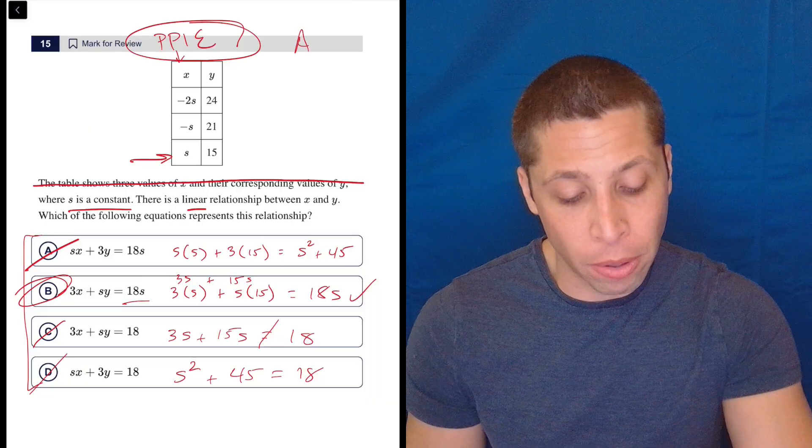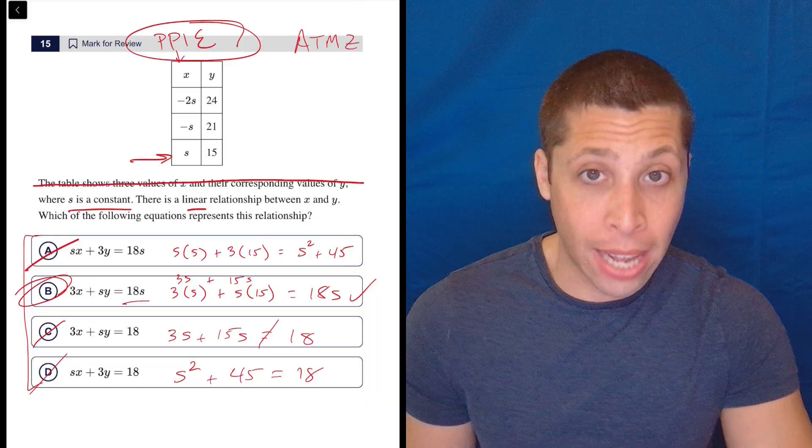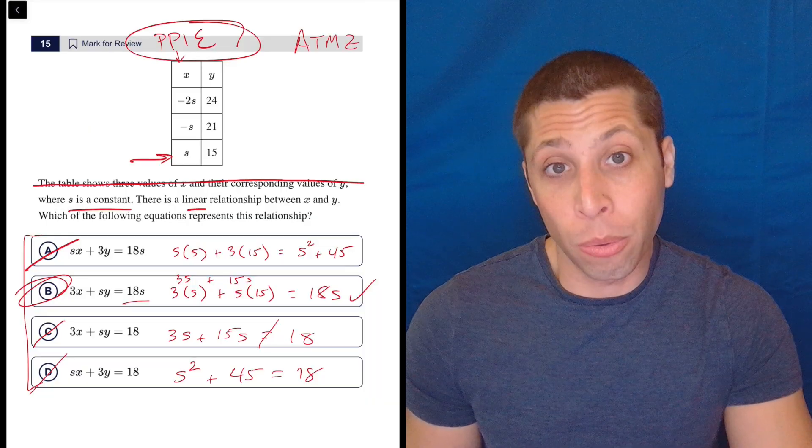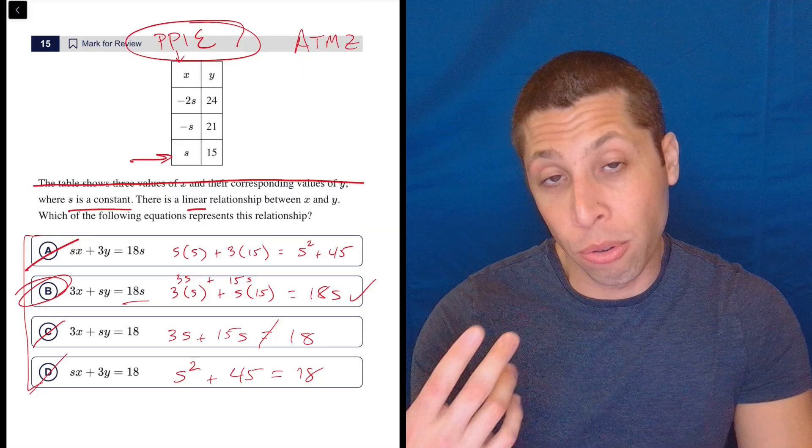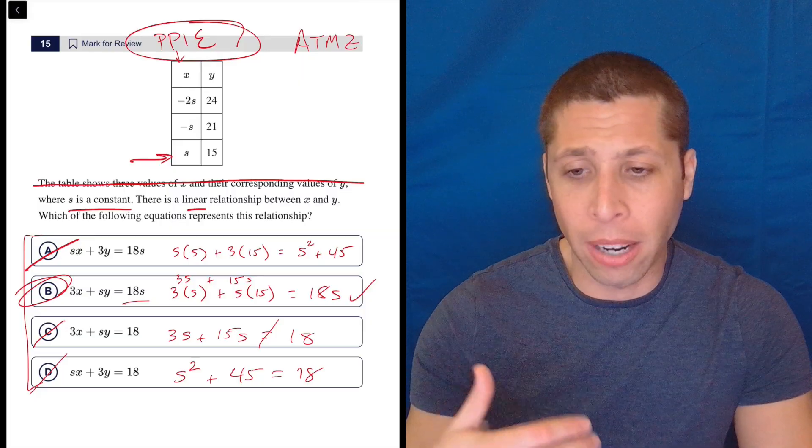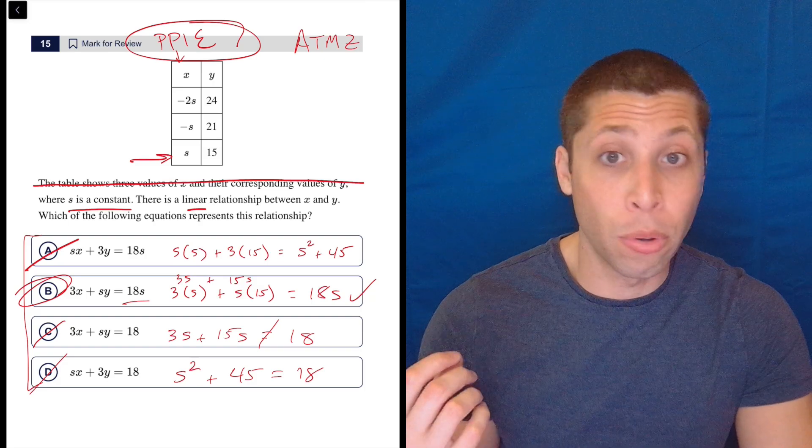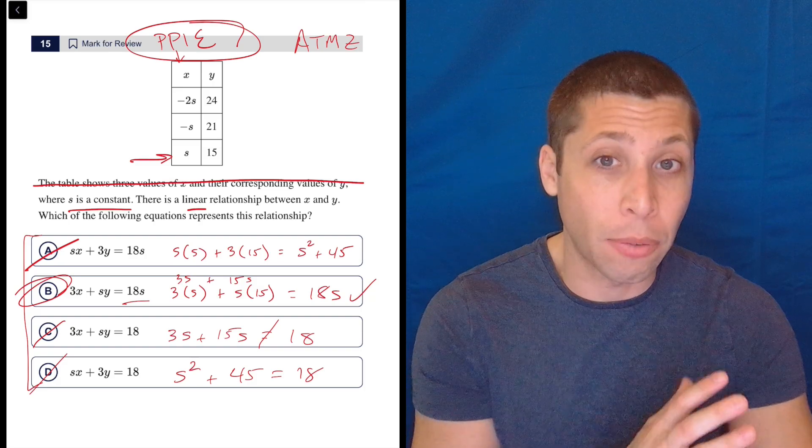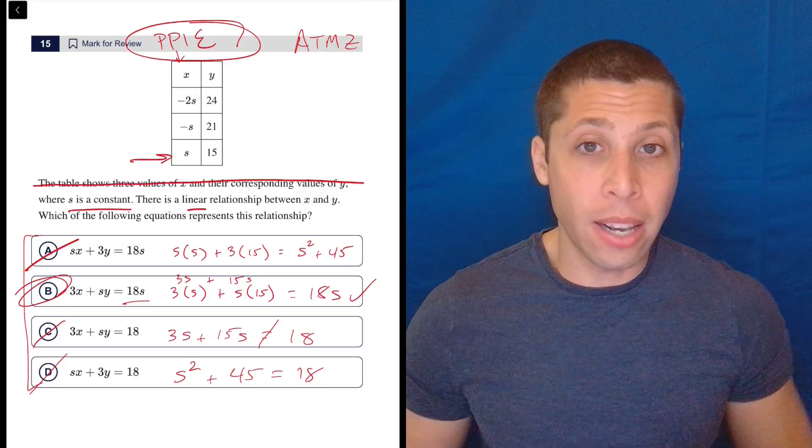The first time I ever did this, I arithmetized. So, I made up values for s. You can do that. You can also then maybe go to Desmos and use the graphing feature, you can kind of use s as a slider if you really want. You can do the regression if you really want. There's lots of clever things you can do in Desmos, but none of that's even necessary.